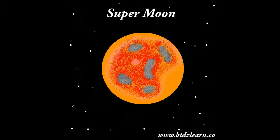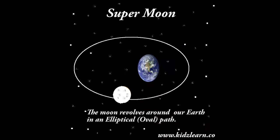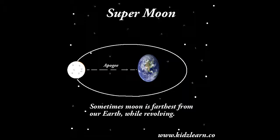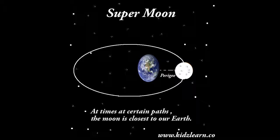Super Moon and Lunar Eclipse. The Moon revolves around our Earth in an elliptical or oval path. Sometimes the Moon is farthest from our Earth while revolving. At times, at certain paths, the Moon is closest to our Earth.